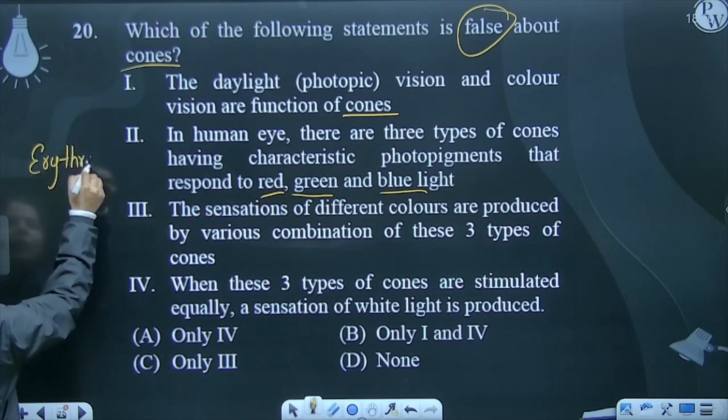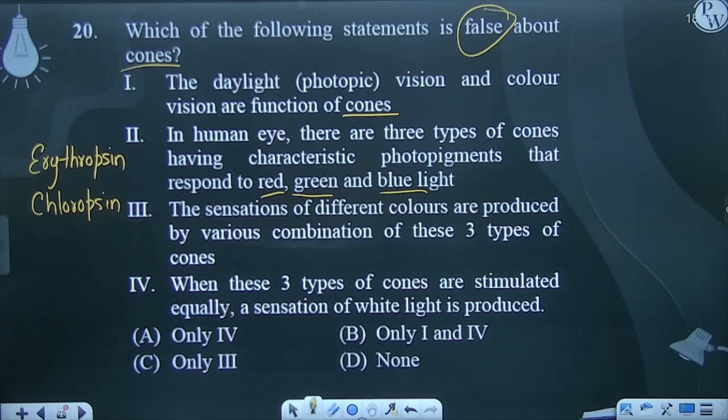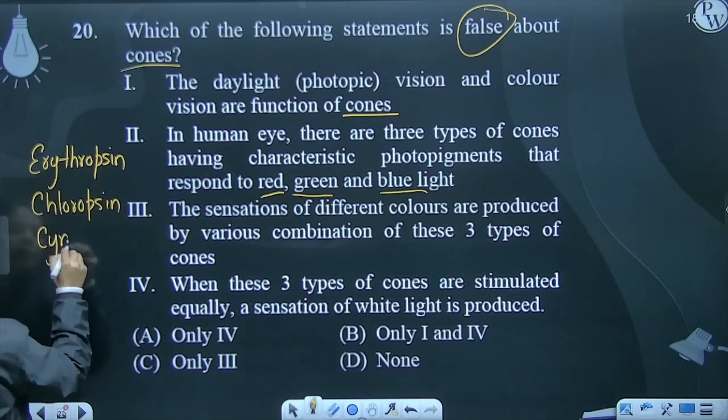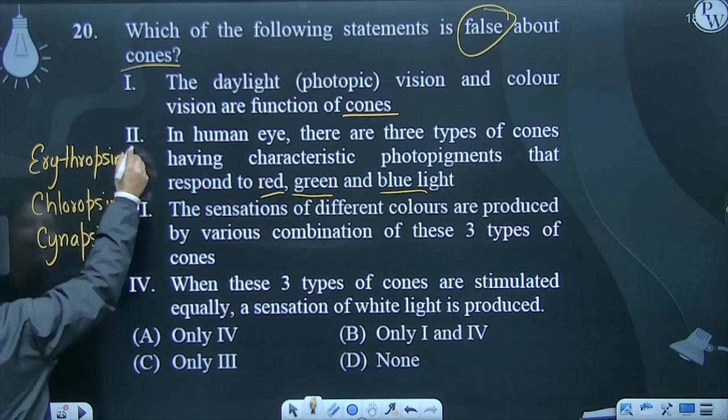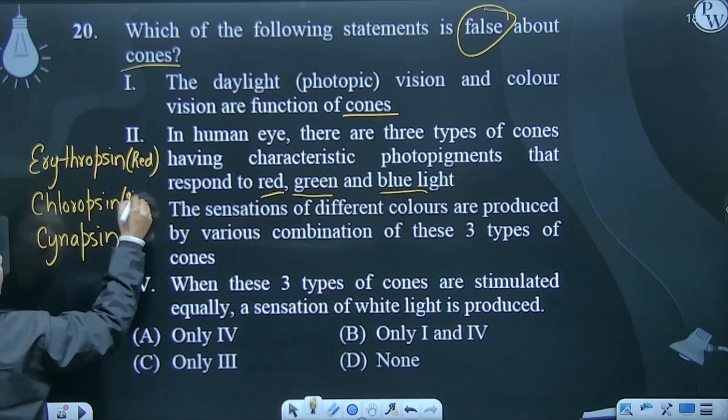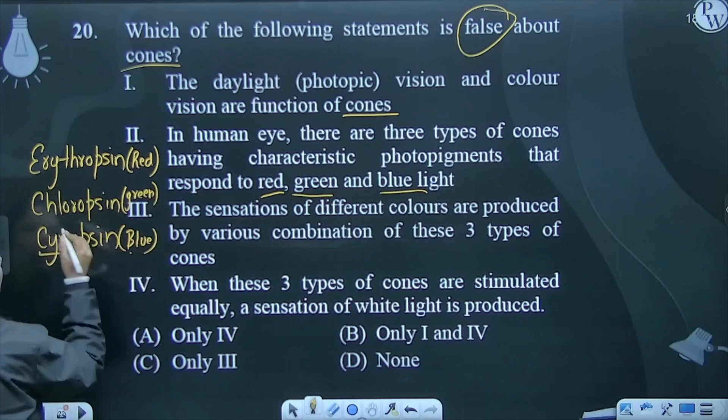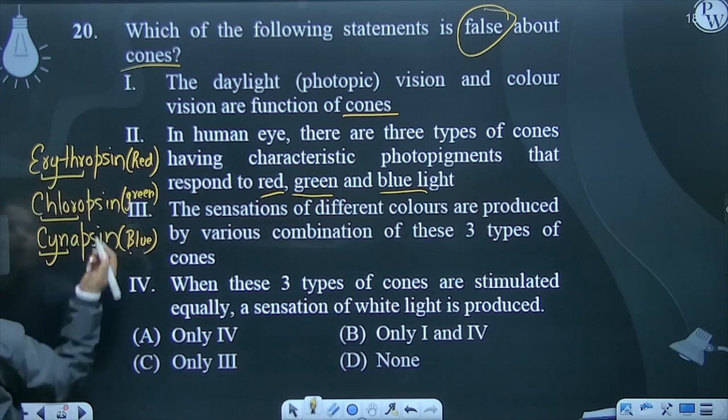Erythroxyl, chloroxyl, and third one cyanopsin. This color is basically red, this is for green, and this one is for blue. Cyan color or blue color. Chloro refers to green and erythro to red like blood vessels.